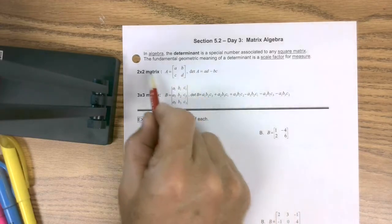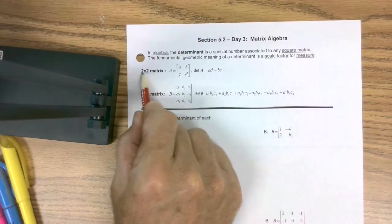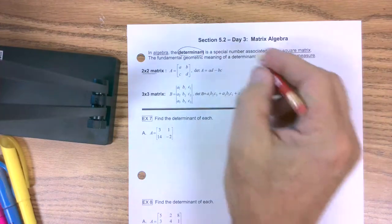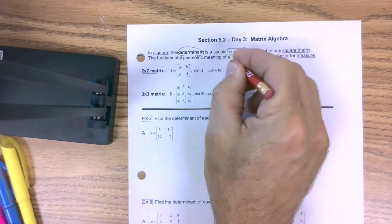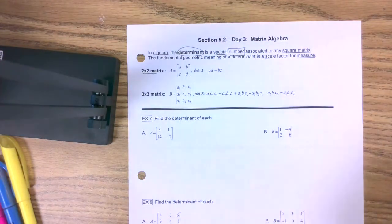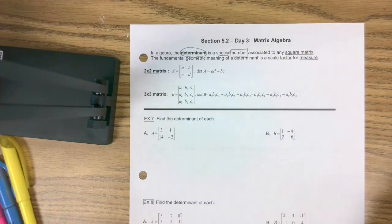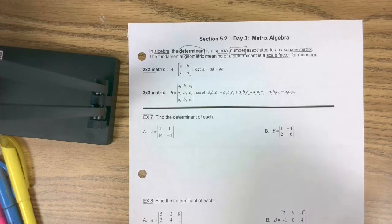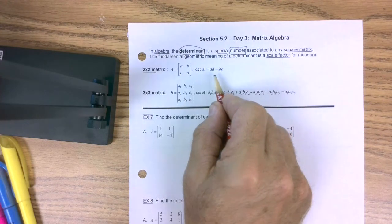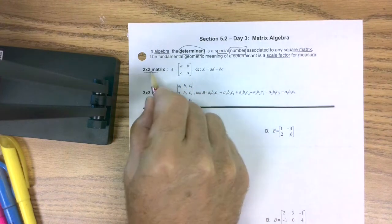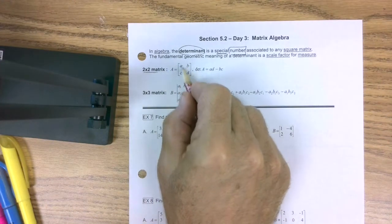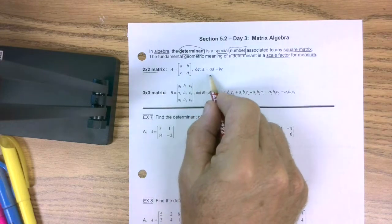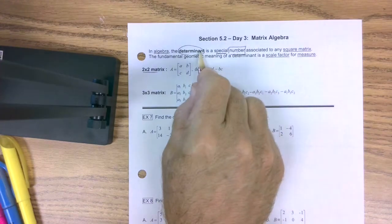But a 2x2, to find the determinant—by the way, a determinant is a special number. It's special. Why is it special? Because Kramer invented something that uses that number. Let's just get down to business here. So here you have a 2x2 matrix, two rows, two columns. And how do you find this special number that's called the determinant?